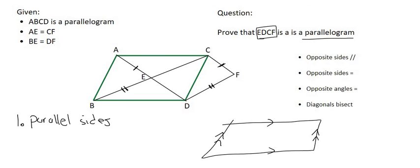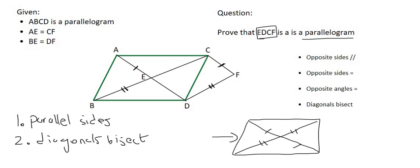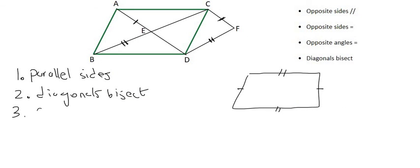The second way is to prove that the diagonals bisect, so it will look like this over here. The third way is to prove that all sides are equal, or all the opposite sides are equal, so we'll say here, the opposite sides are equal.